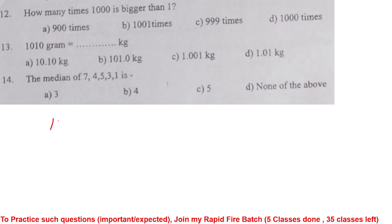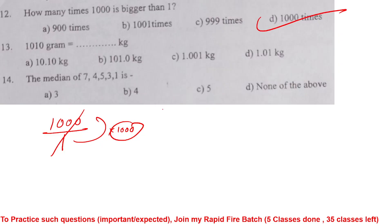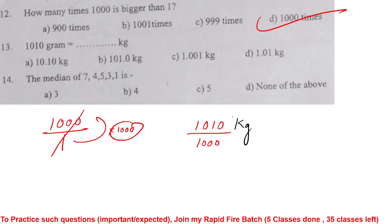How many times is 1000 bigger than 1? The answer is 1000 times — Option D is correct. Related conversion: 1010 grams divided by 1000 = 1.01 kg — Option D is correct.